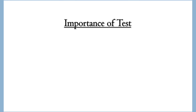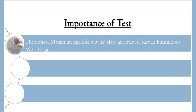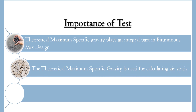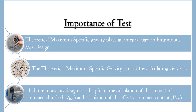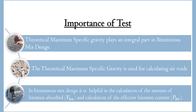Importance of test: Theoretical maximum specific gravity plays an integral part in bitumen mix design. It is used for calculating air voids. In bituminous mix design, it is helpful in calculation of the amount of bitumen absorbed and calculation of the effective bitumen content.